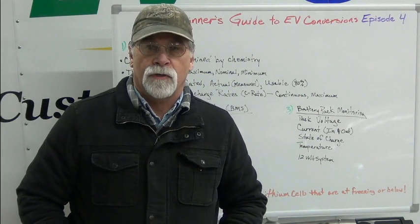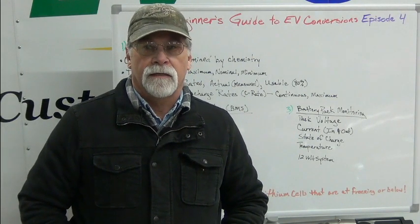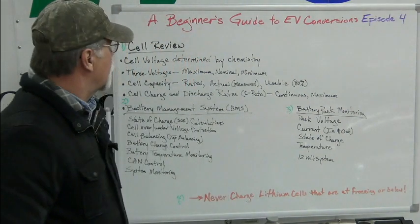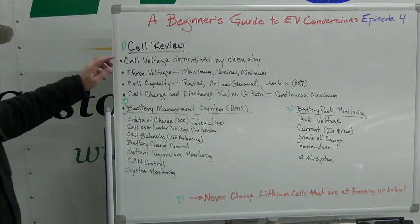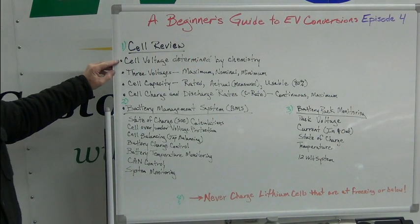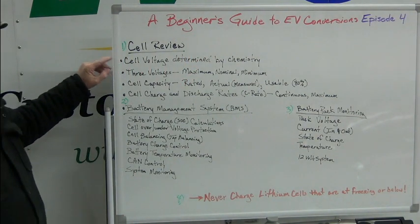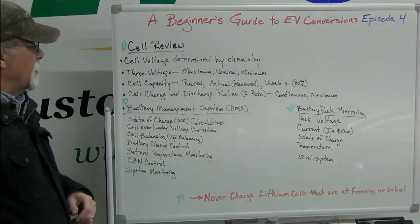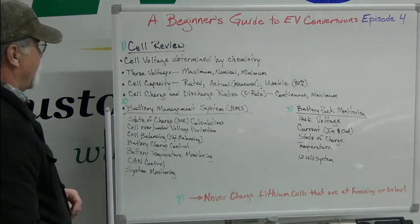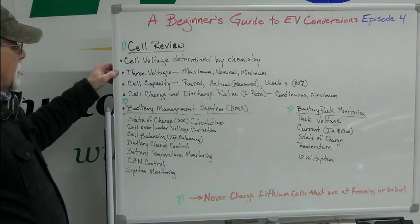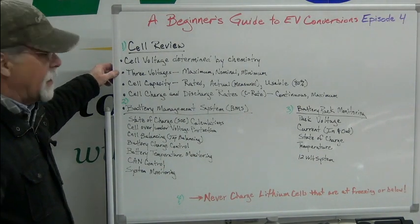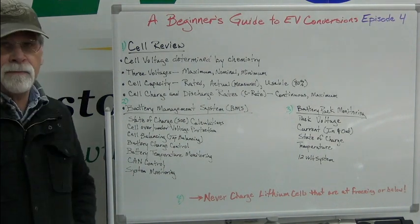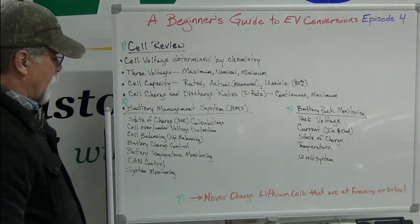We're still going to be discussing cells and batteries in this episode, so let's do a little cell review. Remember, the cell voltage is determined by the chemistry, so different chemistry cells will have a different voltage. There are three voltages of a cell that we're going to be interested in: the maximum, the nominal, and the minimum.